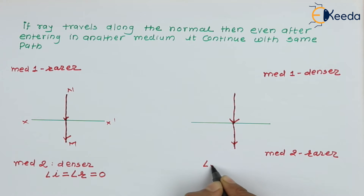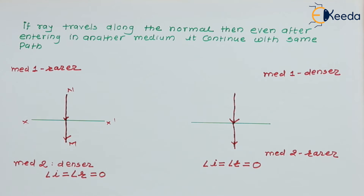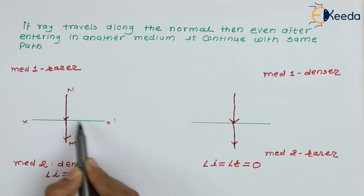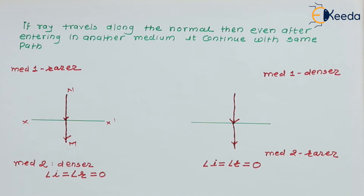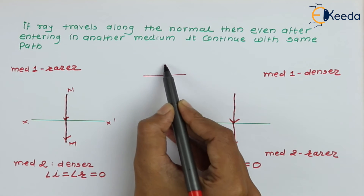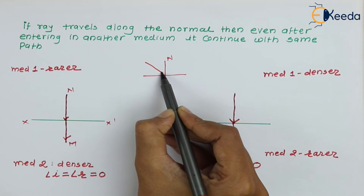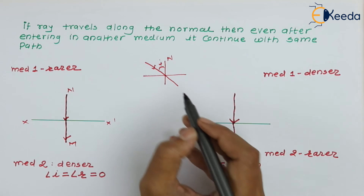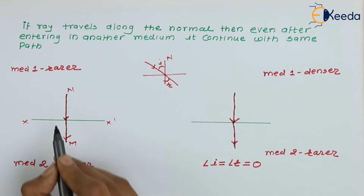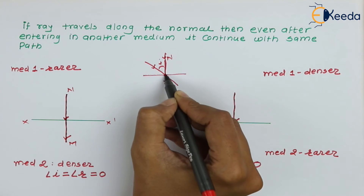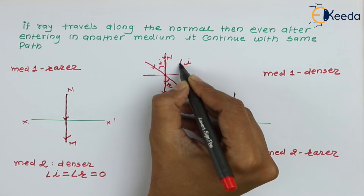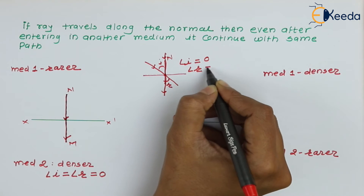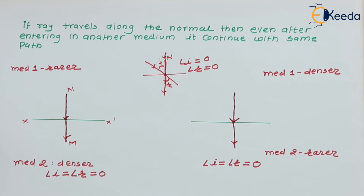Similarly, for denser to rarer medium: if the incident ray travels along the normal, the refracted ray will not deviate and will travel the same path. So angle of incidence equals angle of refraction equals 0 in both cases. This is because the angle of incidence and angle of refraction are always measured with the normal, not with the surface.